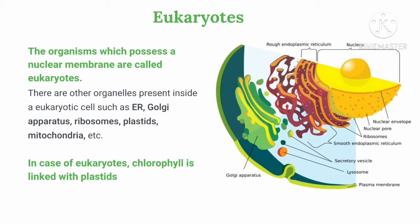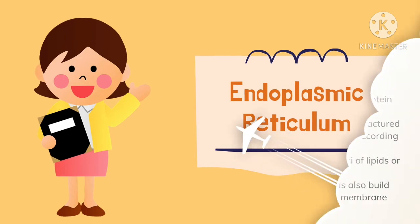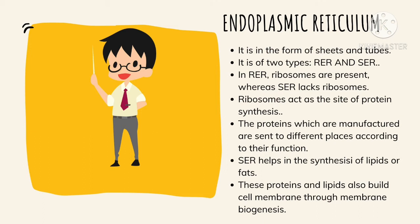Starting from the nucleus, we have the endoplasmic reticulum which has ribosomes on it. Because of that, it is divided into two types: rough endoplasmic reticulum, which has ribosomes, and smooth endoplasmic reticulum, which does not possess ribosomes. The endoplasmic reticulum consists of flattened tube-like structures — sheets and tubes. Ribosomes act as a site of protein synthesis. The DNA gets converted into mRNA, which is responsible for protein synthesis. That mRNA lands on the ribosome and protein synthesis occurs there.